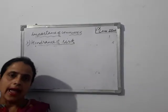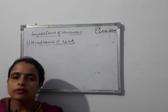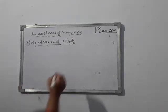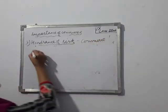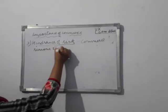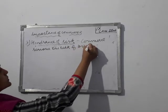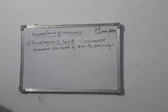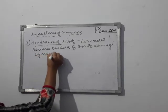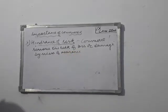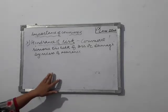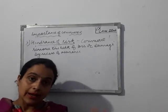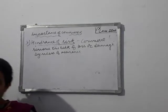With the help of insurance, commerce is removing the hindrance of risk which each and every producer bears. Commerce removes the risk of loss or damage by means of insurance. If there is any product that has been produced, problems due to damage during production or transit can arise.